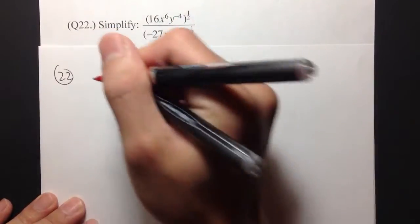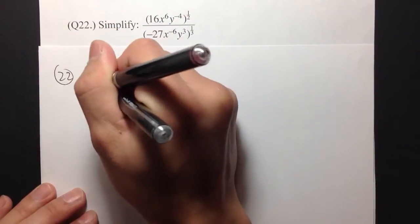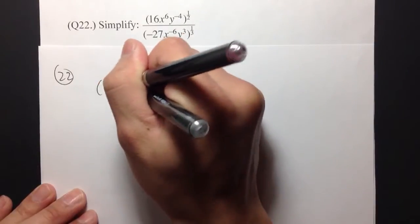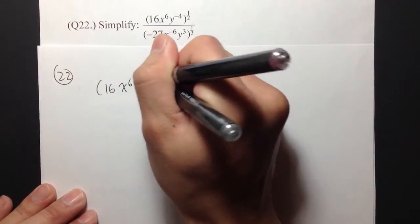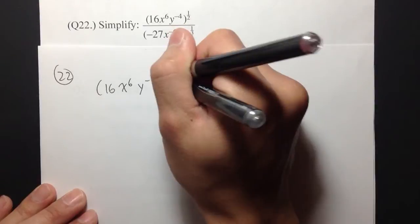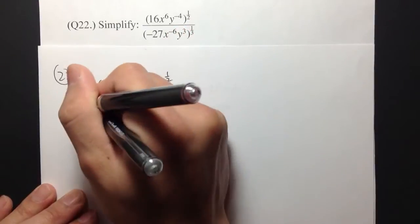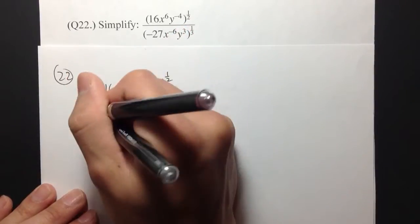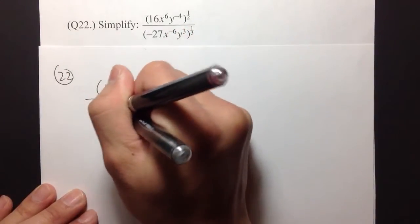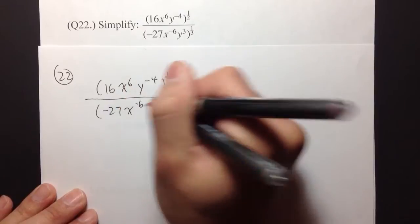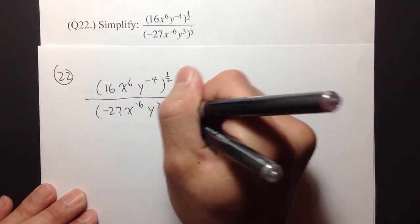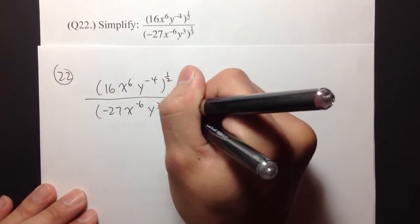Number 22, we have 16, x to the 6, y to the negative 4, raised to the 1 half power, over parentheses, negative 27, x to the negative 6, y to the 3rd power, raised to the 1 third.